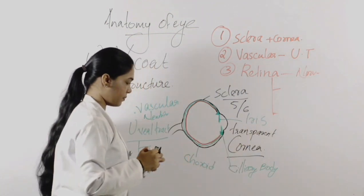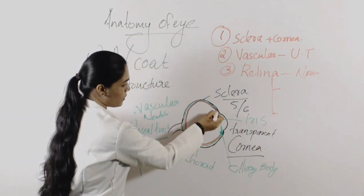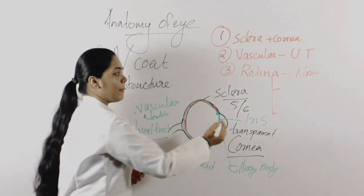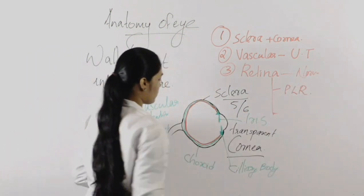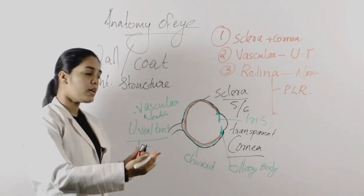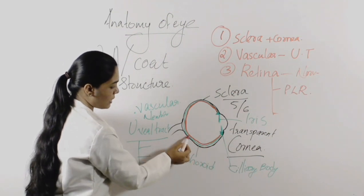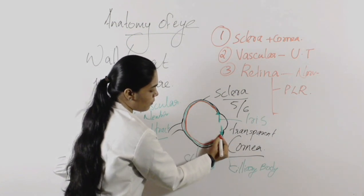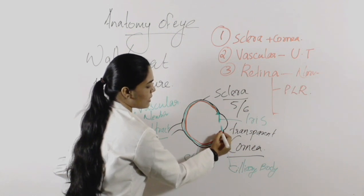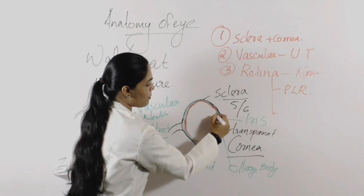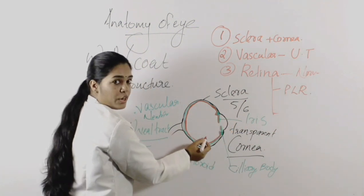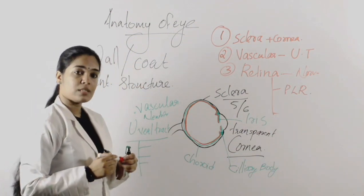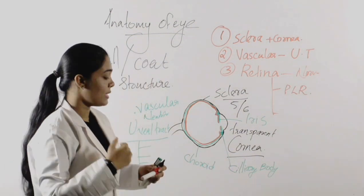Now the two parts of retina. The layer closely related to the choroid is known as the pigmented layer of retina. It is highly pigmented and has a close relationship with the choroid underneath. It extends along with the choroid and is also present behind the ciliary body as well as behind the iris.